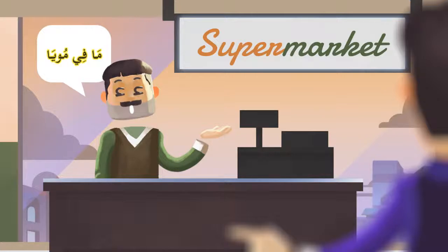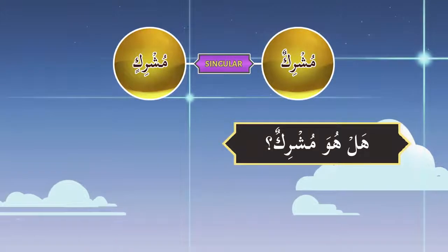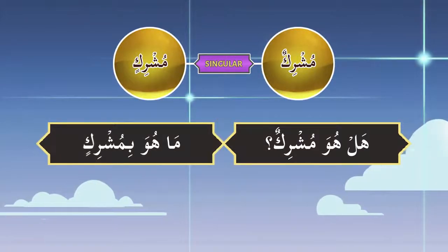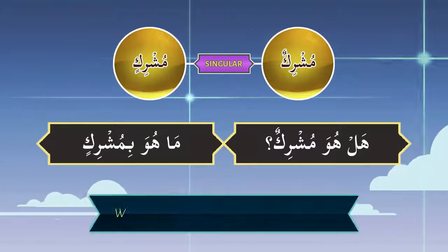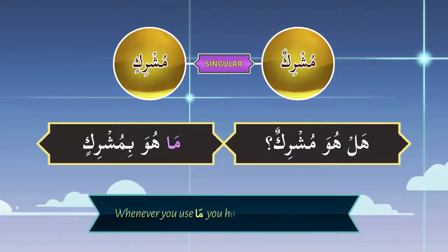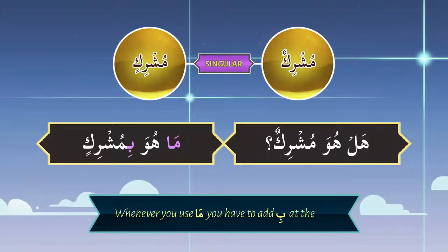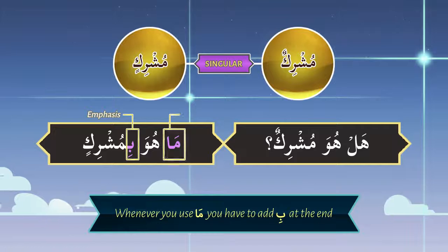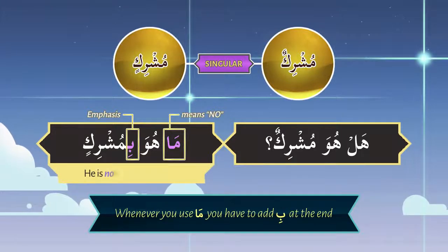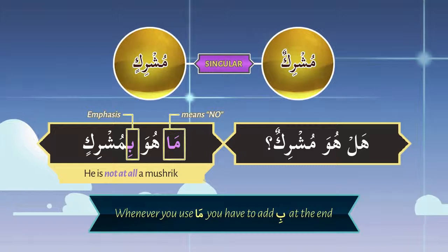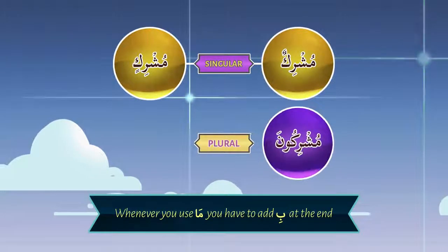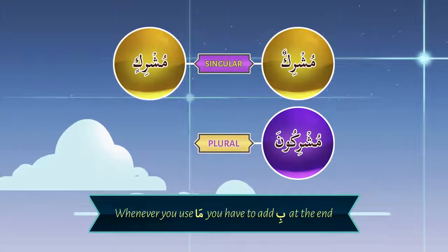'Ma' is for no. So if I ask you, 'Hal huwa mushrik?' you will say, 'Ma huwa bimushrik.' Remember, whenever you use 'Ma', you have to add 'Bi' before the noun. 'Bi' is there for emphasis. So 'Ma huwa bimushrik' means he is not at all a mushrik. Also remember, the plural of mushrikun is mushrikun, and the plural of mushrikin is mushrikin.